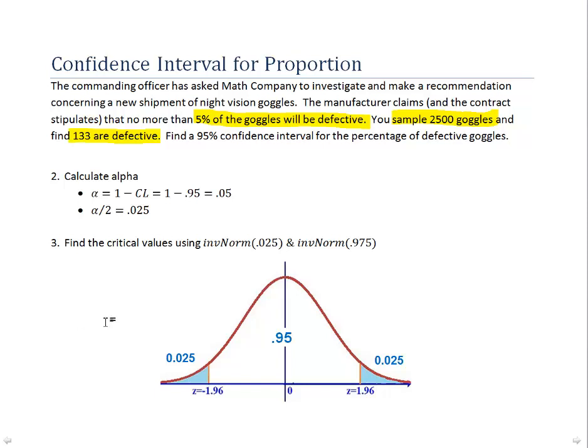Using the inverse norm functions we will get the left and right critical values: negative 1.96 and 1.96. So that's what the problem sets up like. Now let's go ahead and calculate the confidence interval.